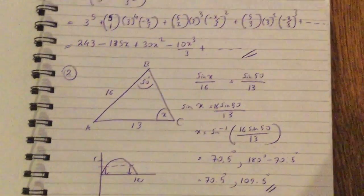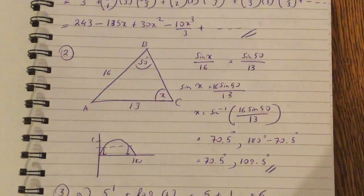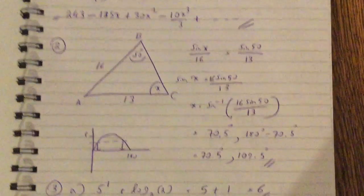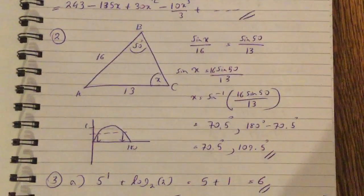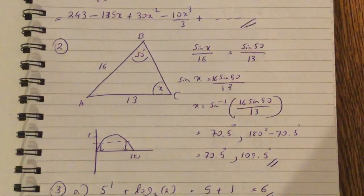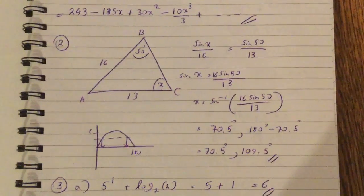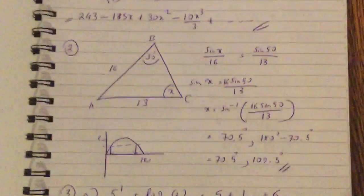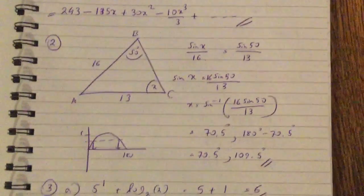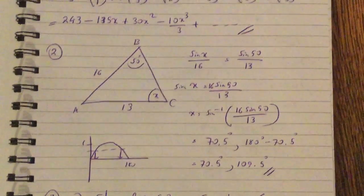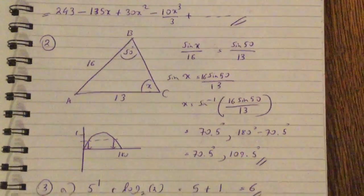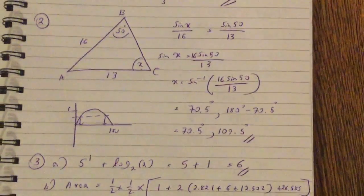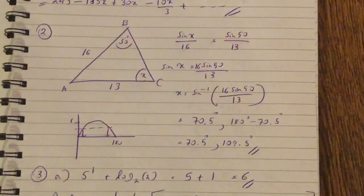Question 2 is a simple sine rule question. We have sin x over 16 equals sin 50 over 13, giving sin inverse of 16 sin 50 over 13. There are two possible solutions from the graph: either 70.5 or 180 minus 70.5, so the answers are 70.5 and 109.5.